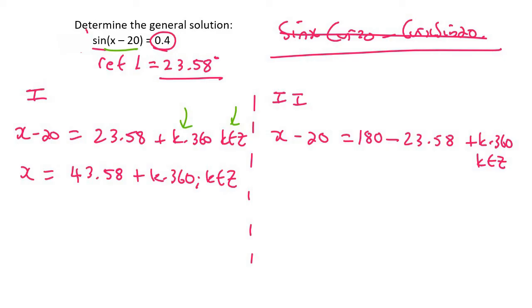And then on the right-hand side, if I took the 20 over and combined all of this together, you should eventually end up with 176.42, and then we say plus k times 360, k is an element of z.